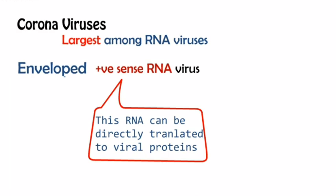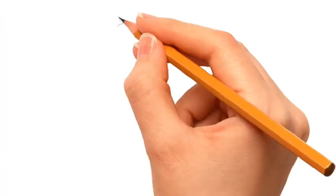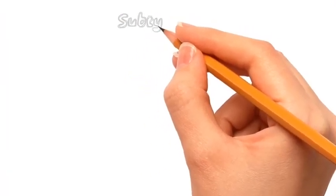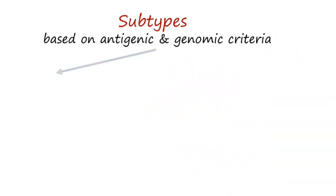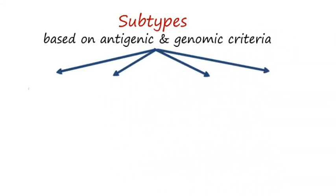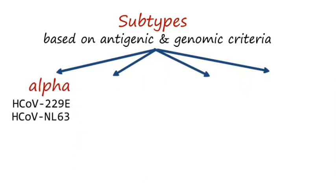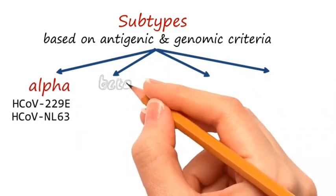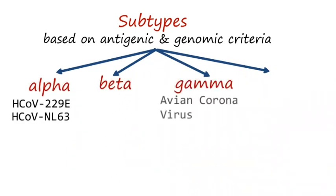Positive-sense RNA means they can be directly translated to the viral proteins — that is, they are similar to mRNA. Based on the antigenic and genomic criteria, they are classified into the following subtypes: alpha, beta, gamma, and delta.